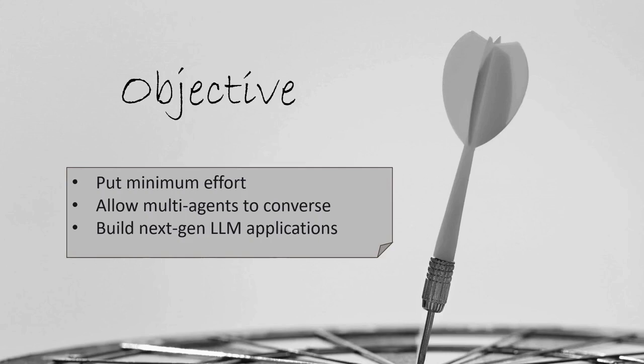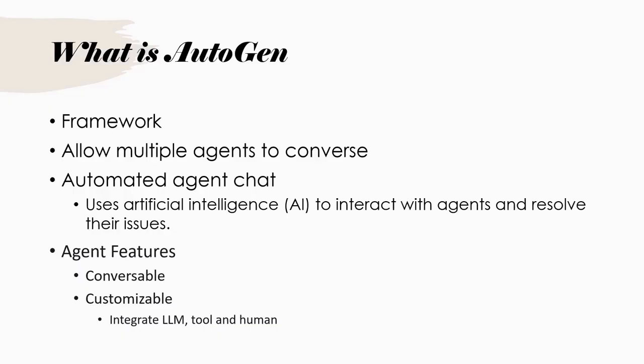The objective of Autogen is that the developer puts in minimum effort to allow multiple agents to converse and build the next generation LLM applications. Autogen is the framework that was introduced in September 2023 to allow multiple agents to converse.